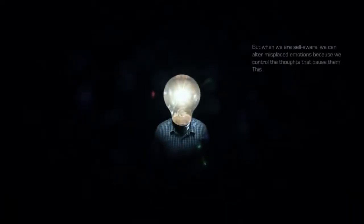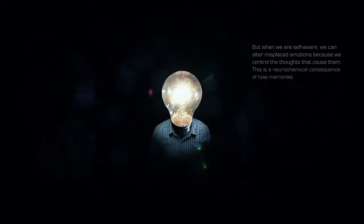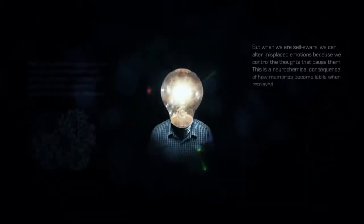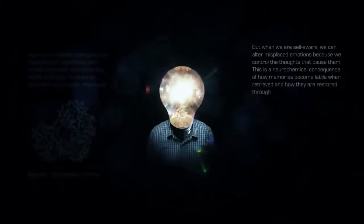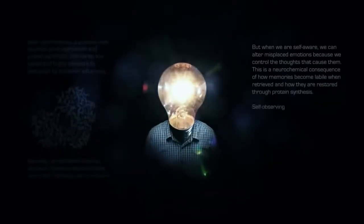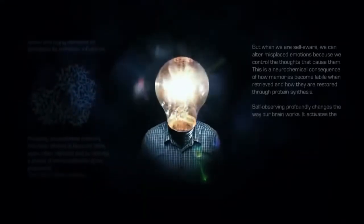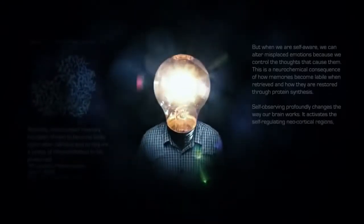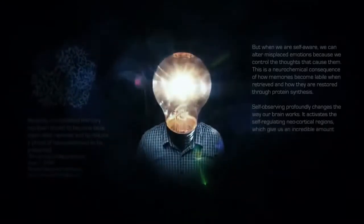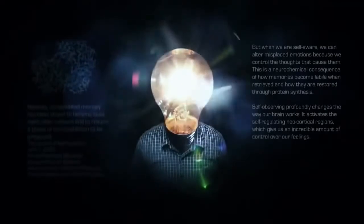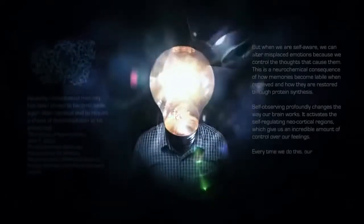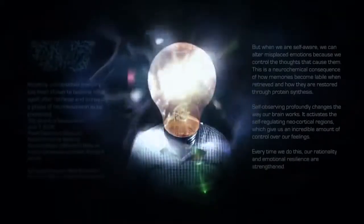But when we are self-aware, we can alter misplaced emotions because we control the thoughts that cause them. This is a neurochemical consequence of how memories become labeled when retrieved. Self-observing profoundly changes the way our brain works. It activates the self-regulating neocortical regions which give us an incredible amount of control over our feelings. Every time we do this, our rationality and emotional resilience are strengthened.